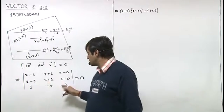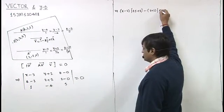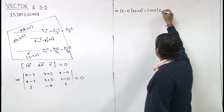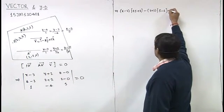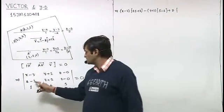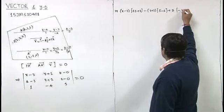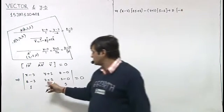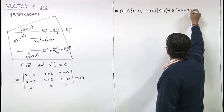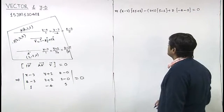it is 1 into 5 that is 5 and it is minus 2 plus z into 1 into 1 into minus 4 and 5 into 1 minus 5 equal to 0, right.